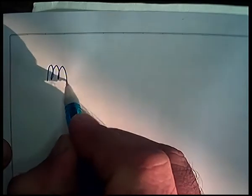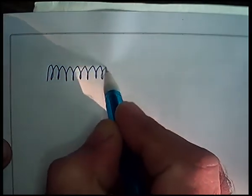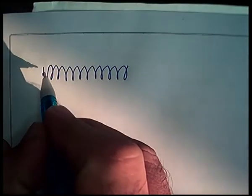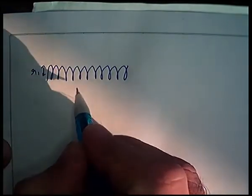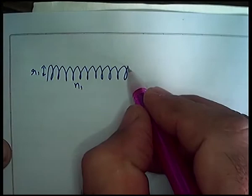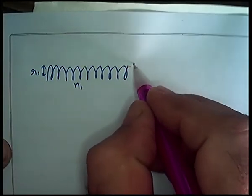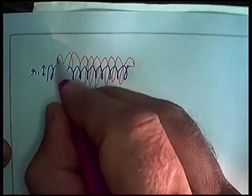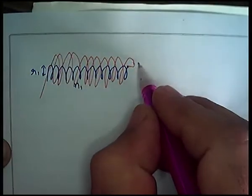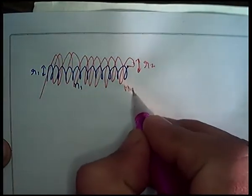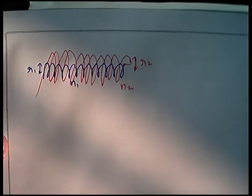This coil has radius R1, and the number of turns per unit length is N1. And on the other side, another coil with radius R2 and number of turns N2. So what do we do?